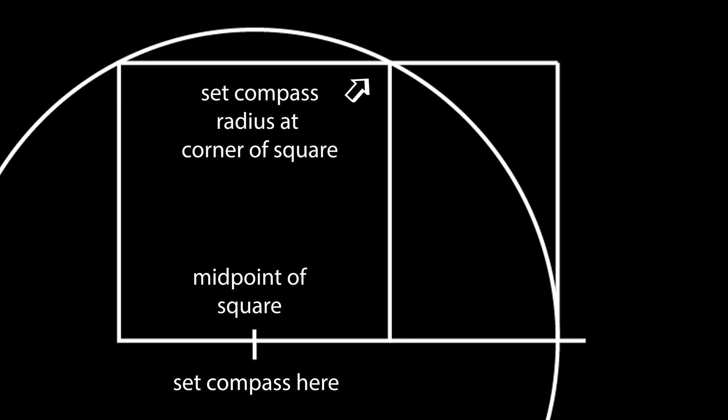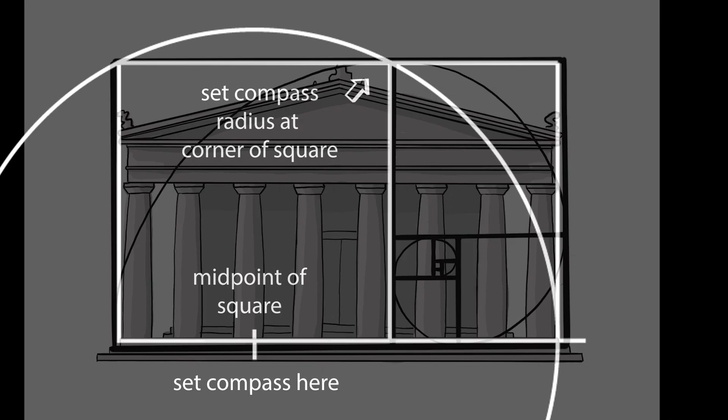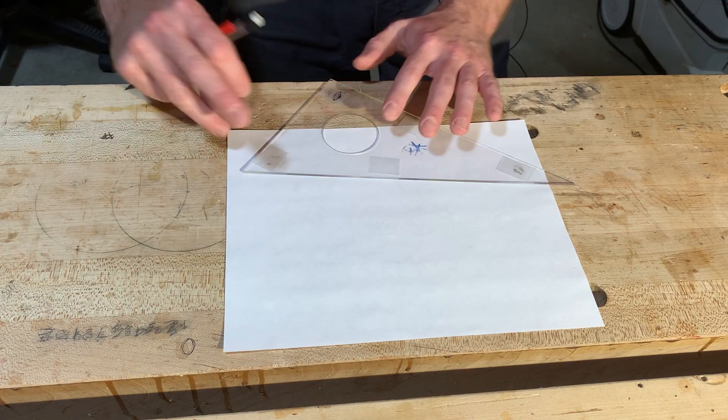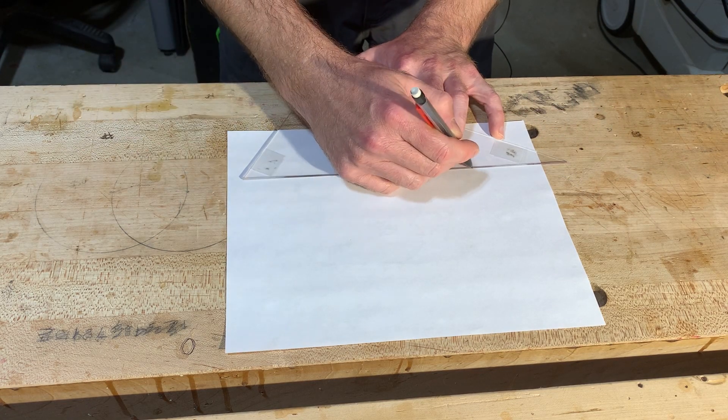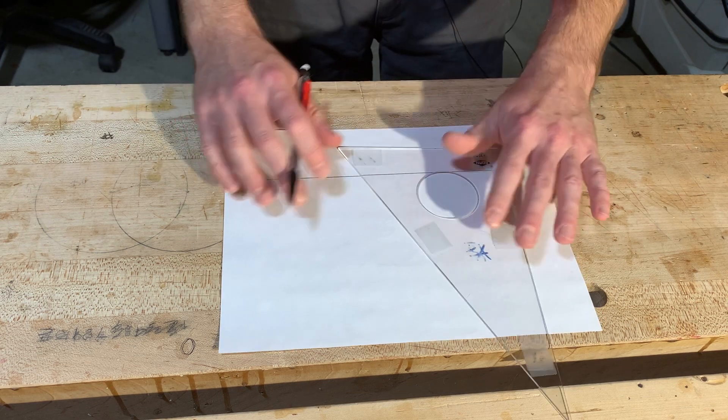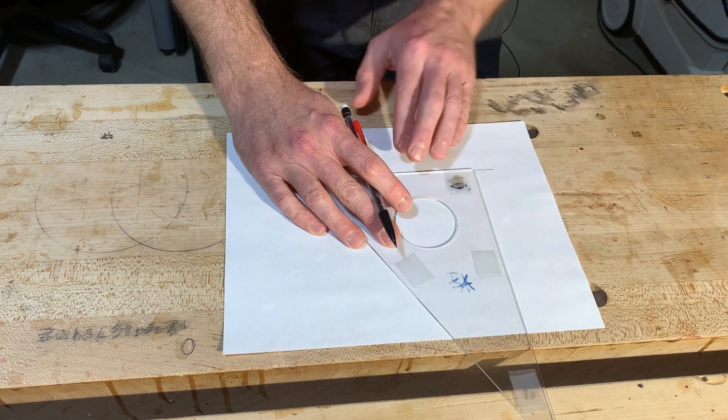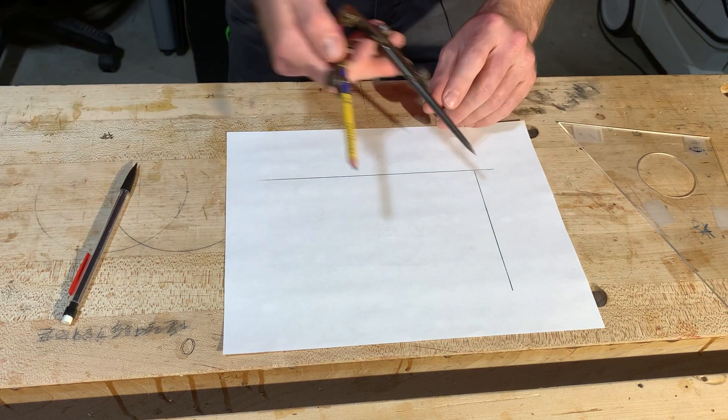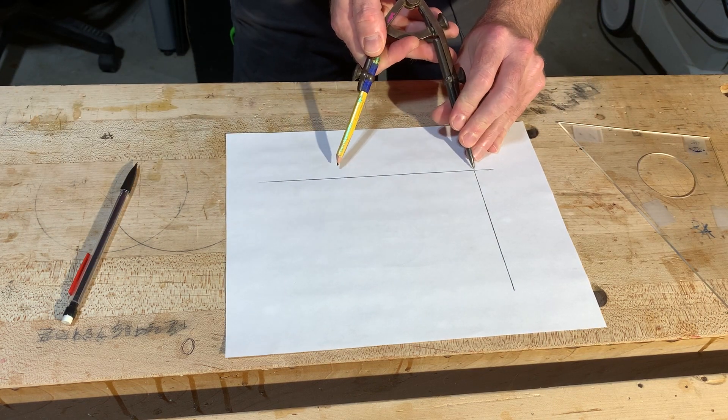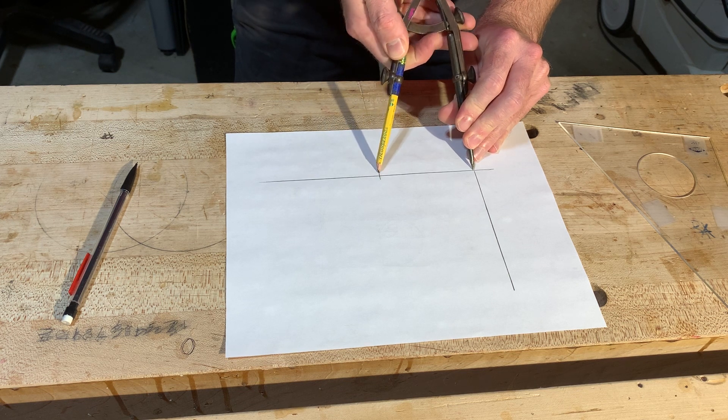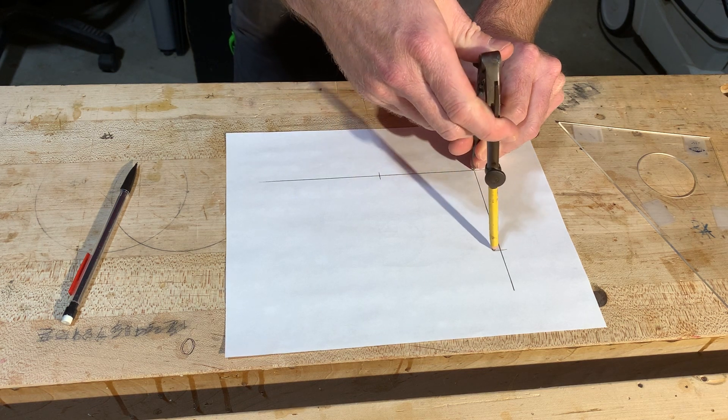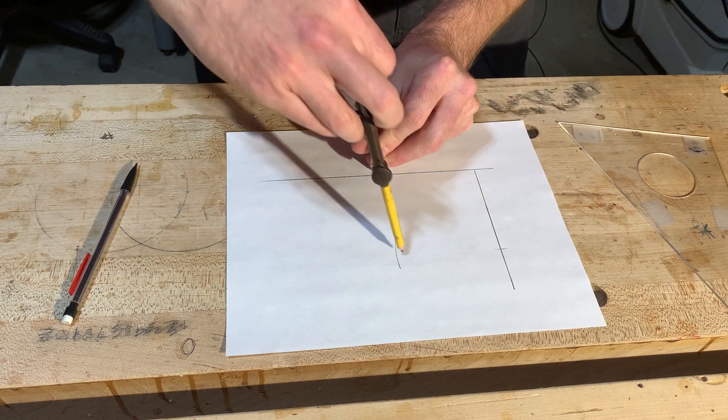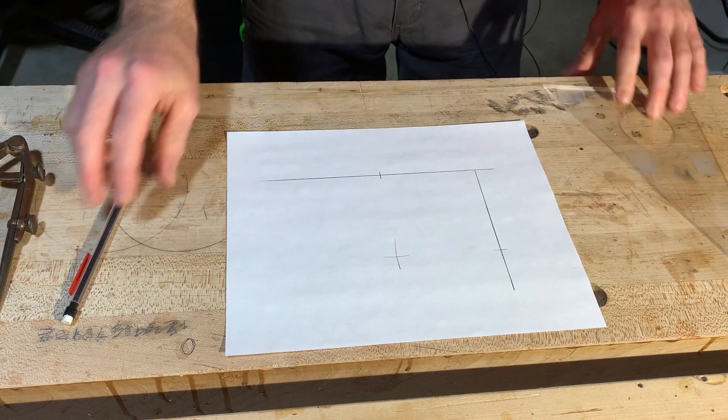So I think this is how the ancient Greeks used to do it. So if you start with any square, so we'll just do this quick. So call this your square. So I'll just say that our square is, I don't know, that big. I'll just pull one of these. That'll give us a perfect square.